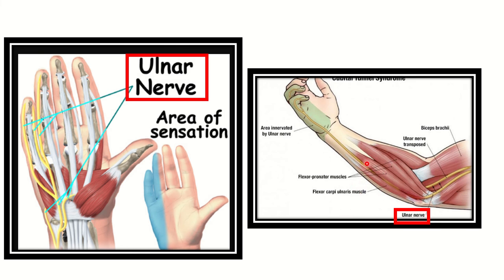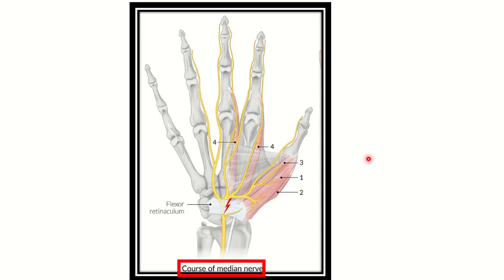The flexor digitorum profundus and flexor carpi ulnaris — the ulnar nerve provides innervation to both the flexor carpi ulnaris and the medial half of the flexor digitorum profundus. In this picture we can see the thenar area, and this thenar eminence is supplied by the median nerve.